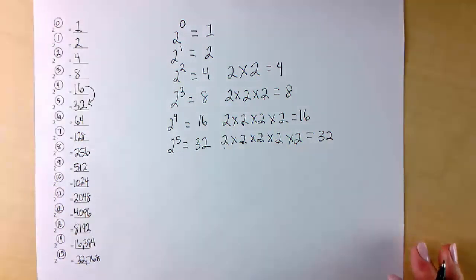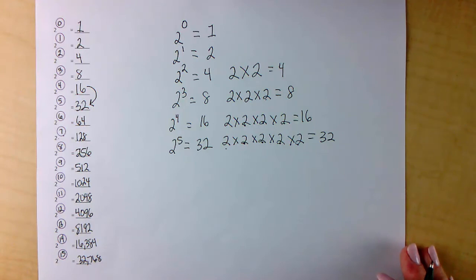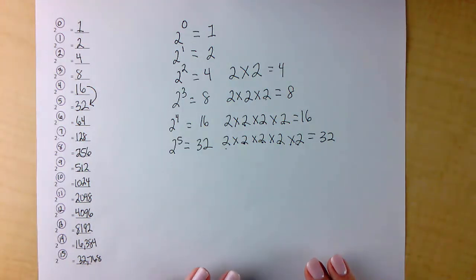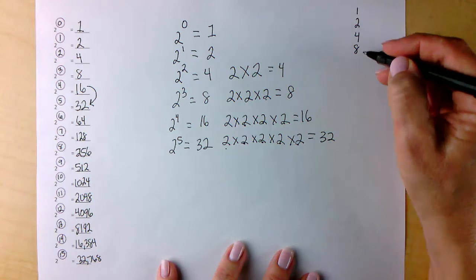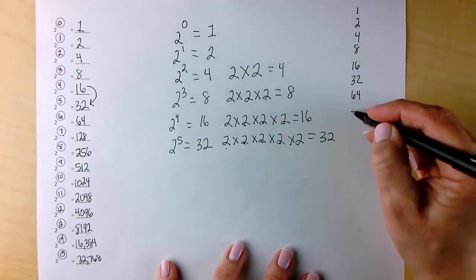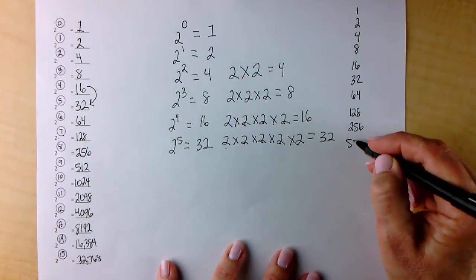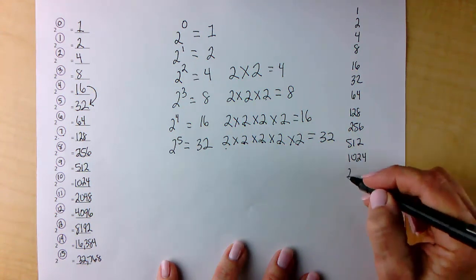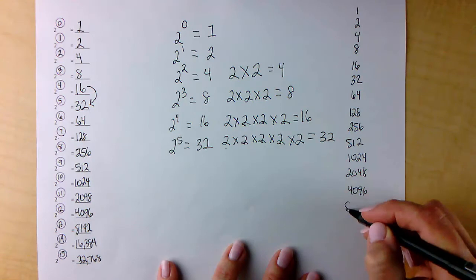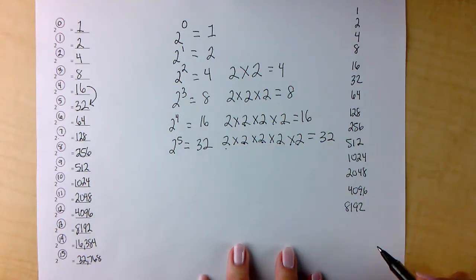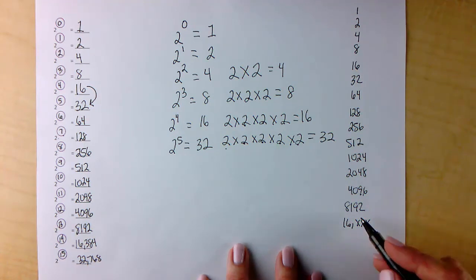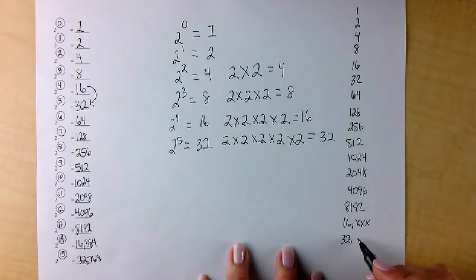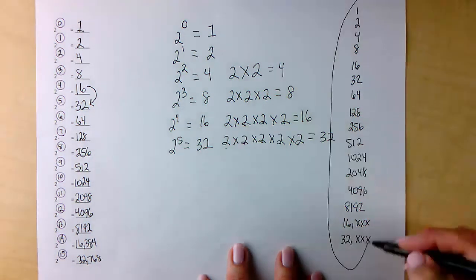If you can get this high and memorize these numbers — the memorization really just requires doubling everything — that will help you when solving networking problems in later chapters. So again: 1, 2, 4, 8, 16, 32, 64, 128, 256, 512, 1024, 2048, 4096, 8192. If you get stuck, just double 8,000 and you know it's going to be 16,000 something. Same thing — double 16,000 and you know it's around 32,000.